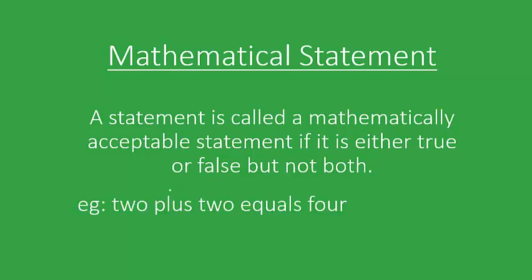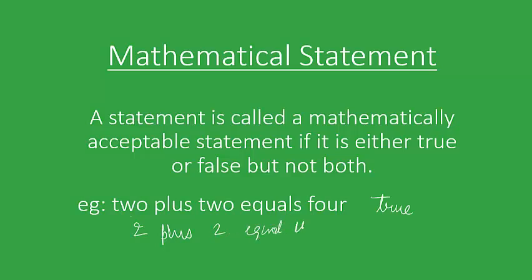For example, '2 plus 2 equals 4' is a statement and it's true, as we know from our mathematical classes. Therefore, this is a mathematical statement. Even if we had written that '2 plus 2 equals 5,' even then it would be a mathematical statement, because we know for sure that it is a false statement. So both of these represent mathematical statements.